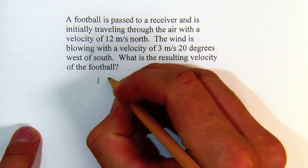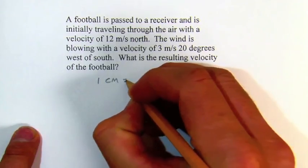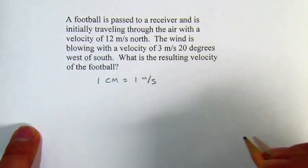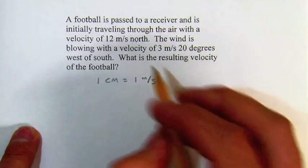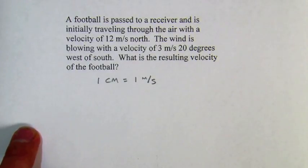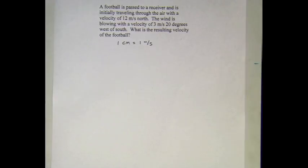To make a scaled drawing, we need to set our scale. On our drawing, 1 centimeter is going to equal 1 meter per second. It's nice because the numbers are relatively small and it will fit on our paper easily. So 12 meters per second will be 12 centimeters and 3 meters per second will be 3 centimeters.